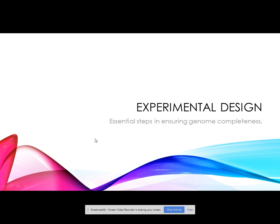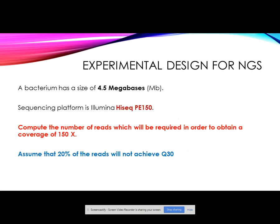In terms of experimental design, we have specific steps to ensure genome completeness. This is one exercise you can present to students: give them a model genome with a genome size of 4.5 megabases from the NCBI gene bank, provide them with a platform such as HiSeq P150 and a coverage of 150x, and have them compute the required data output. You can also assess their skills by asking them to assume that 20% of reads will not achieve Q30, requiring them to adjust data output to attain complete coverage.